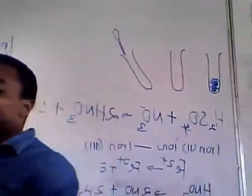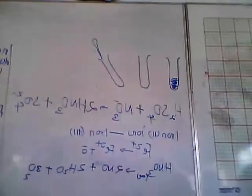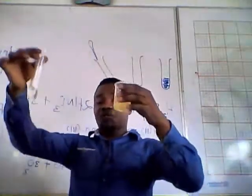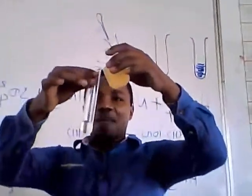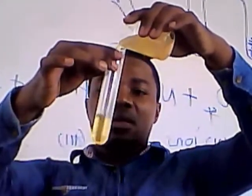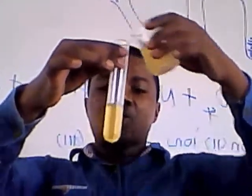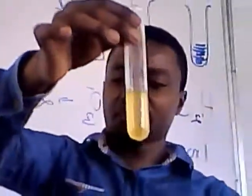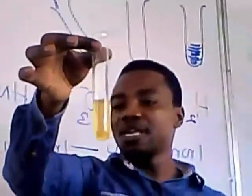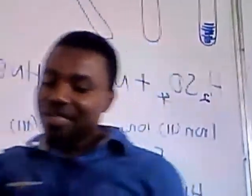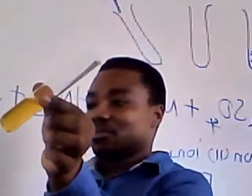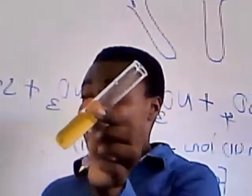Second, add freshly prepared iron(II) sulfate. This is fresh — I'm adding the freshly prepared iron(II) sulfate now. Then hold the test tube in a slanting manner.